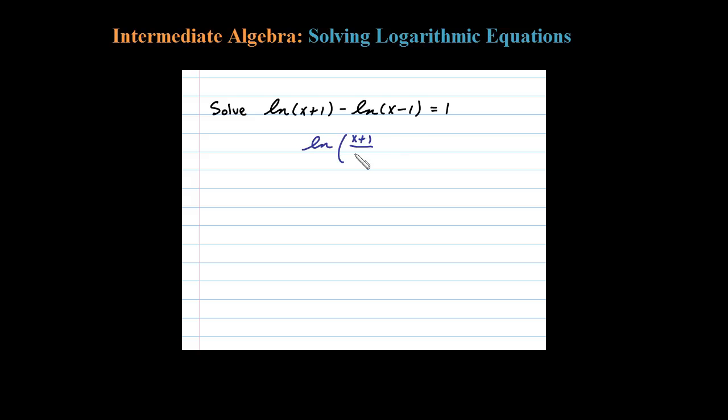And that's supposed to equal 1. Now to solve this, we're going to change it back to an exponential. Natural log is a log base e, so the base here is e - e to the base to this power has to equal that argument. Using the definition, we would say e to the one power has to equal x plus 1 over x minus 1.